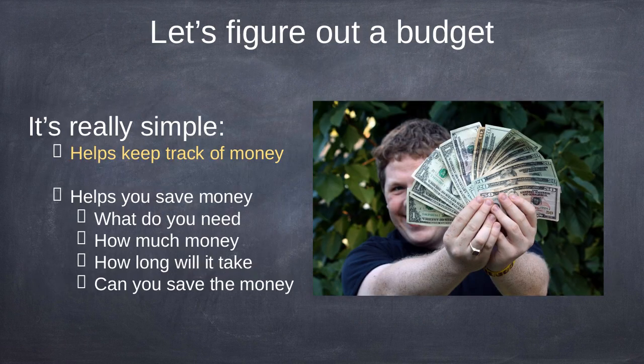So after you weigh the cost and the benefit, the thing you want to do is create a budget. A budget is really simple — it just keeps track of money. It'll also help you save money because it tells you what you need, how much money, how long it will take, and whether you can save the money.